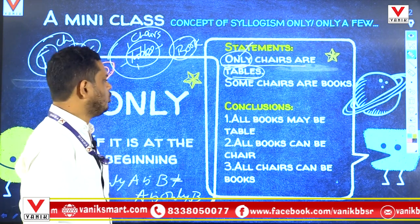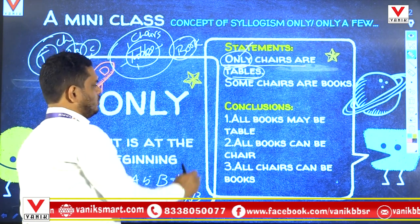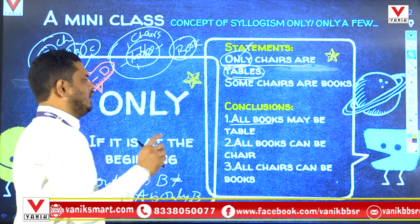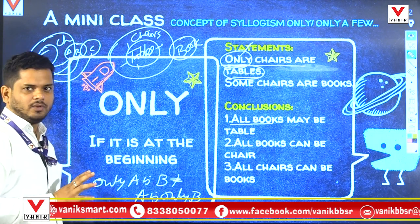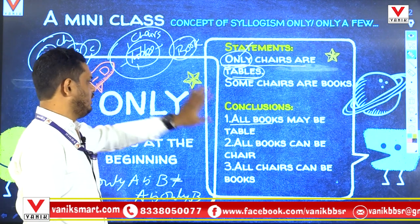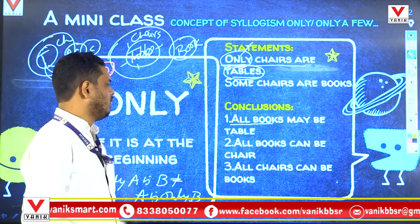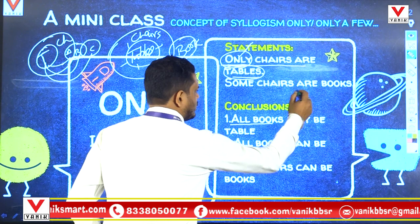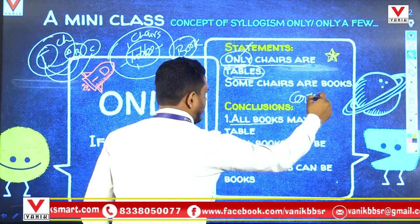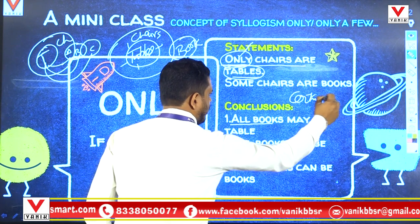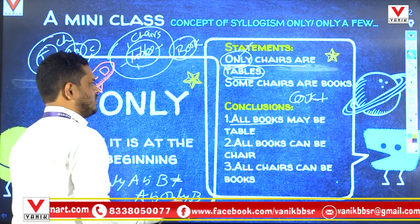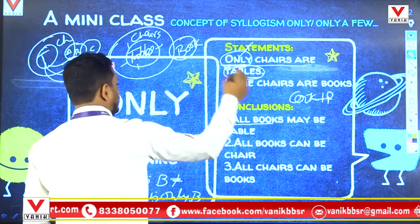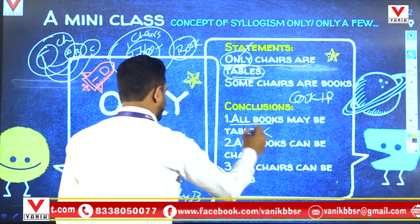Because of the negative relation, if the question is a possibility type, we apply the formula: certain plus possibility makes false. The relation between book and table is certain negative, and the question asks about possibility, so the first conclusion becomes false.